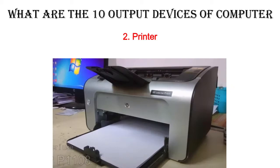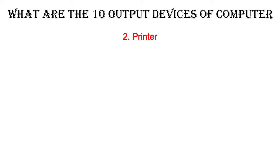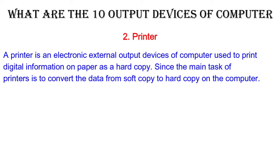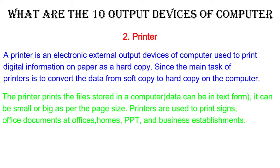2. Printer. A printer is an electronic external output device of a computer used to print digital information on paper as a hard copy. The main task of printers is to convert data from soft copy to hard copy. The printer prints the files stored in a computer. Data can be in text form, and it can be small or big as per the page size.